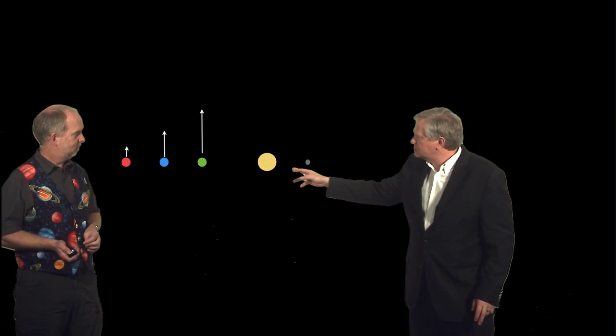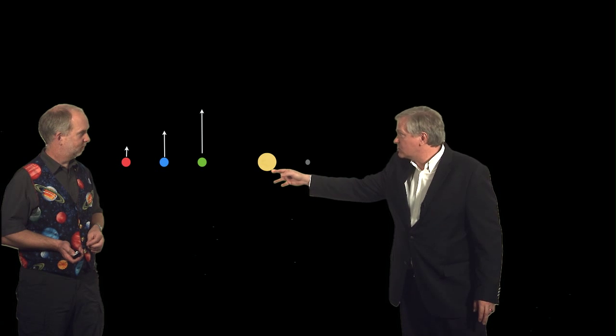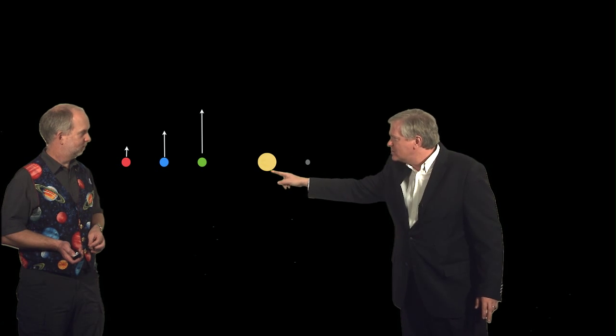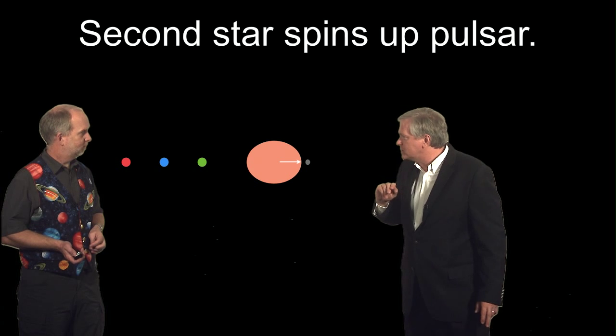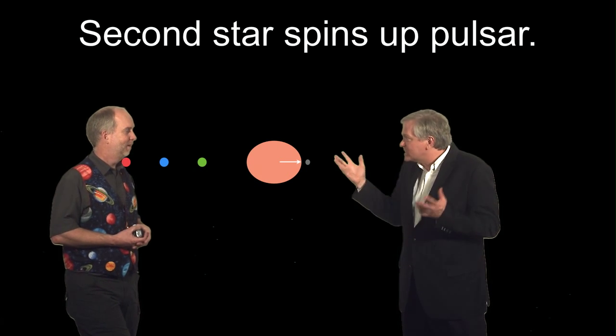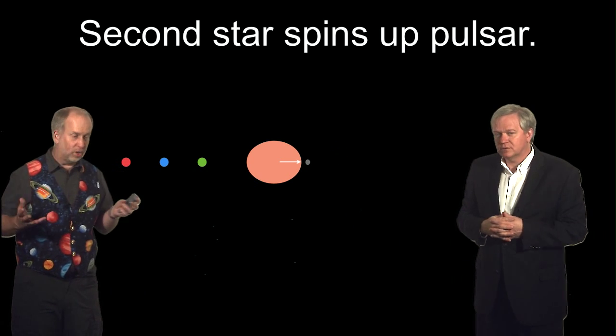And you might worry that this star also has gravity, so that'll counteract. But we know this star weighs less than this one because the first one exploded first. The more massive stars explode first.